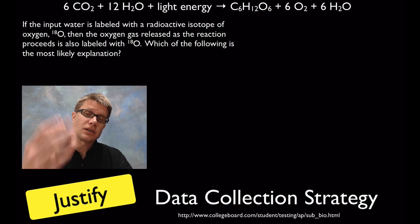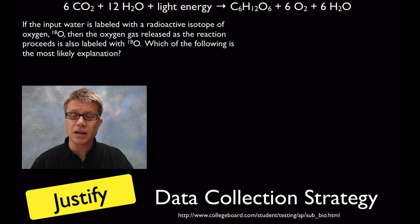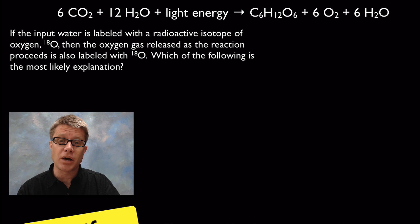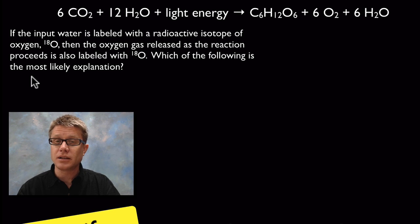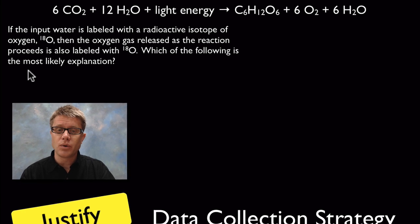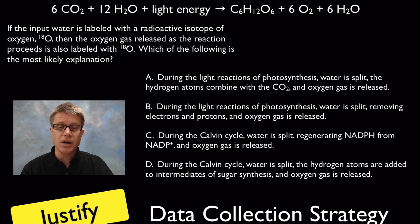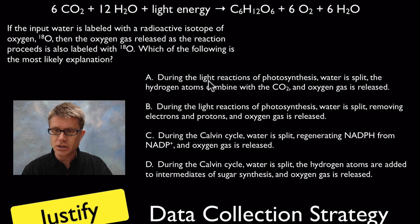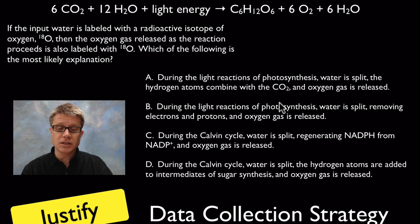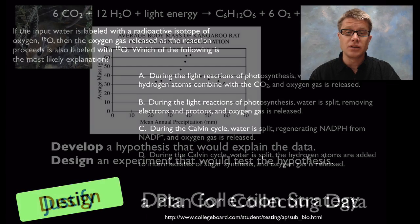You'll be asked questions in four areas. The first is your ability to justify data collection strategies. Here's the formula for photosynthesis. The question says: if the input water is labeled with radioactive oxygen-18, then the oxygen gas released is also labeled with oxygen-18 — which of the following is the most likely explanation? I know that water is split in the light reaction, so I can immediately rule out C and D. Then, looking at option A, it says hydrogen atoms combine with carbon dioxide during the light reaction — but I know carbon dioxide doesn't come in until the Calvin cycle. So I would circle B as the right answer. You're looking at the data collected and justifying the use of that data.